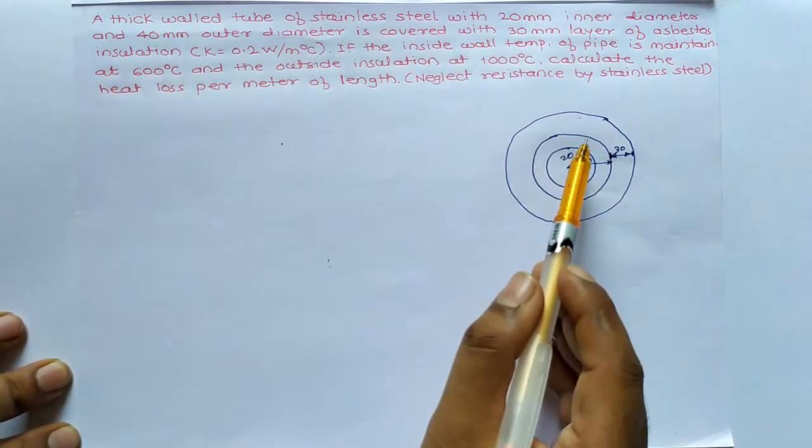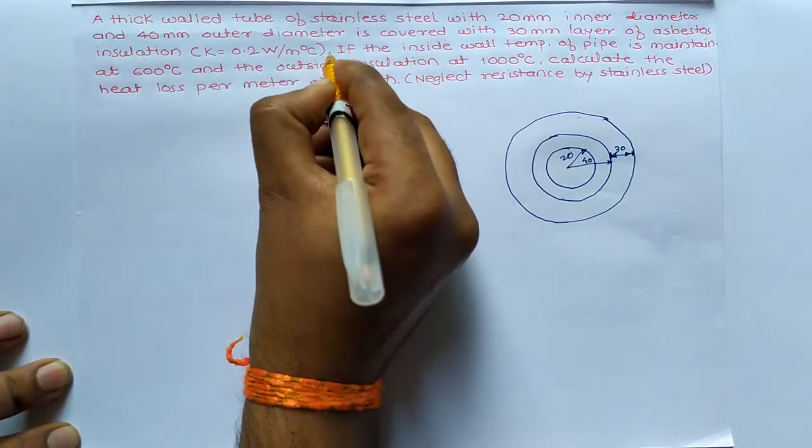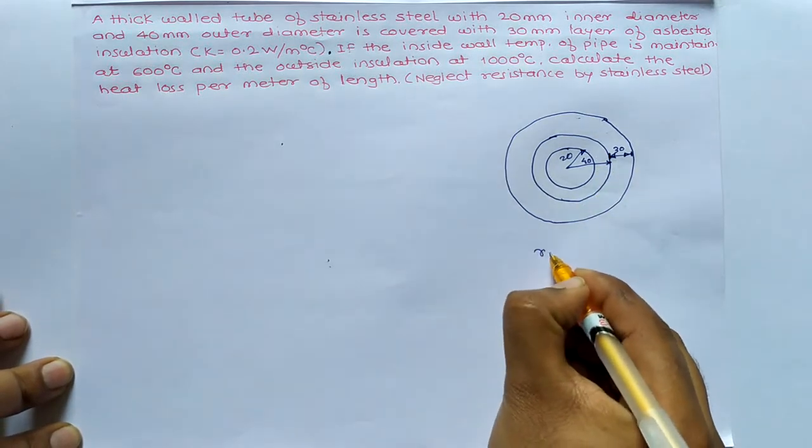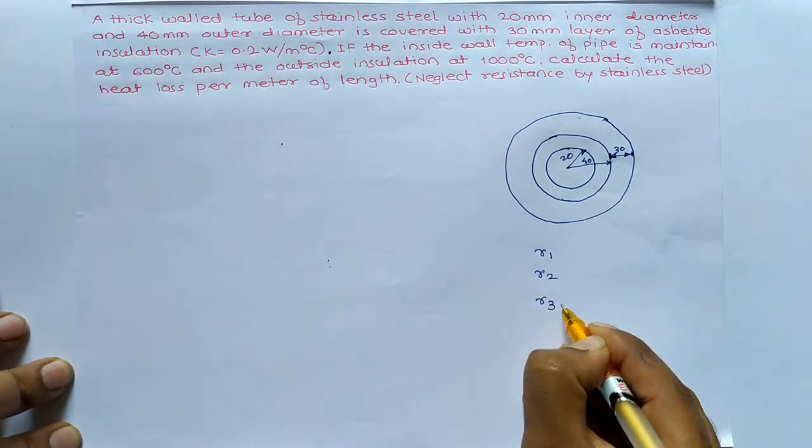30mm layer of asbestos insulation. Now it is completed up to this one, this full swap. So now we need to analyze our R1, R2, and R3.